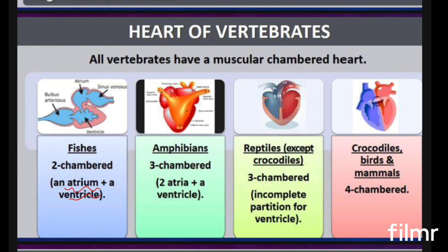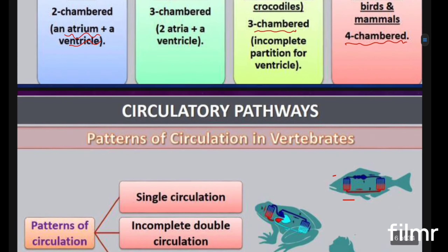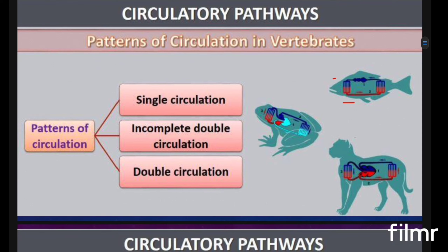In amphibians, the heart becomes three-chambered — two atria and one ventricle — showing evolutionary advancement. In reptiles, the heart is still three-chambered, except in crocodiles where there is an incomplete partition of the ventricle, making it almost four-chambered. The complete four-chambered heart is found in birds and mammals, where the separation of chambers is fully developed.